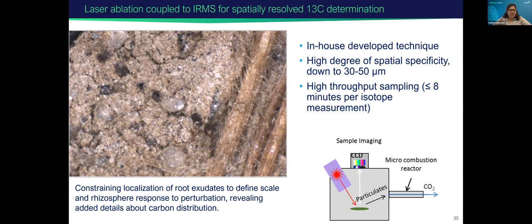Laser ablation is another capability we have here, coupled to the IRMS, and it can be useful for spatially resolved 13C determination. This is an in-house developed technique, which you'll hear a lot more about in the following talk by Jim Moran — this is something he designed. In this image, you see spots — each spot is related to a laser pulse — the rhizosphere going next to a root. This can be used for constraining localization of root extrudates to determine scale and rhizosphere response to perturbation.